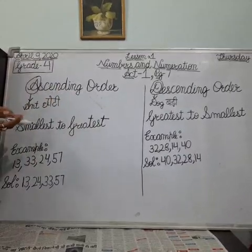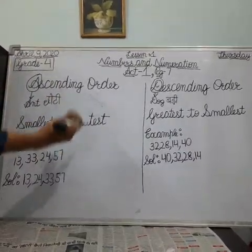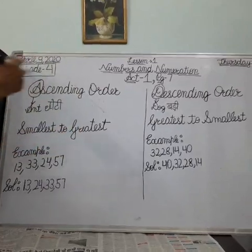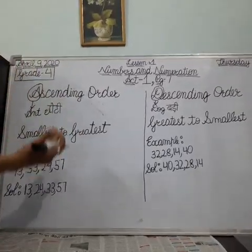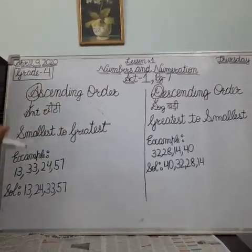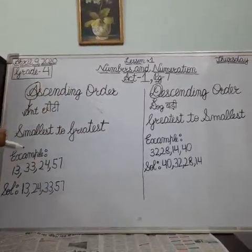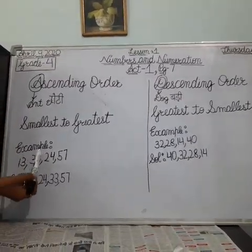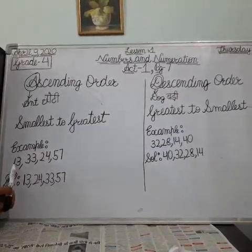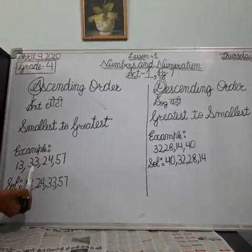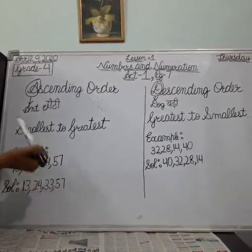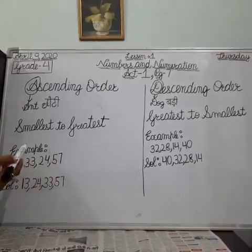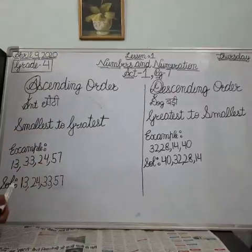So you have to write smallest to greatest — meaning the numbers go from smallest to greatest. Here is a small example: 13, 33, 24, 57. This is ascending order — smallest to greatest.